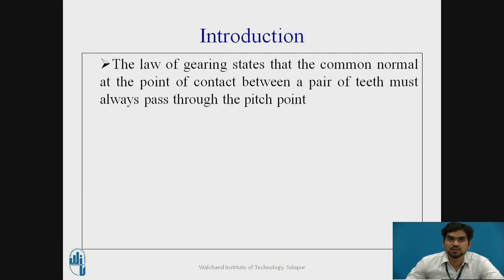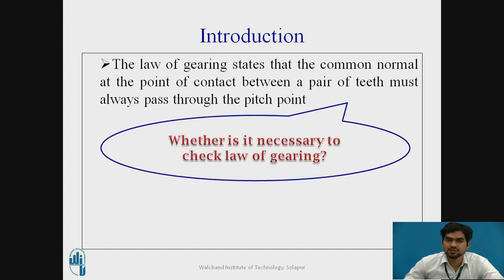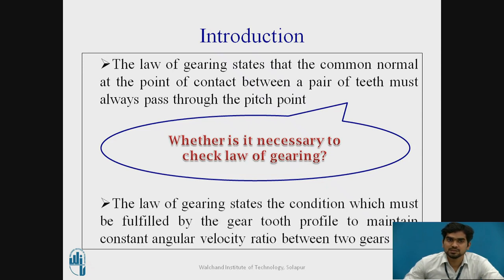Introduction. The Law of Gearing states that the common normal at the point of contact between a pair of teeth must always pass through the pitch point. This states the condition which must be fulfilled by the gear tooth profile to maintain the constant angular velocity ratio between the two gears.